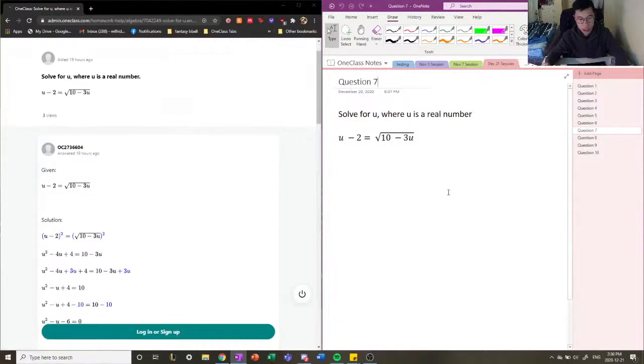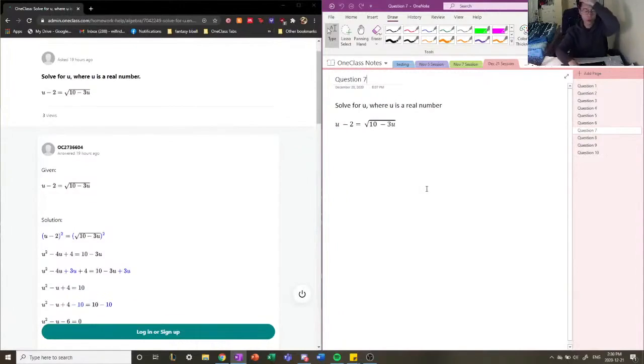Question number seven reads: solve for u where u is a real number. So we need to find the values of u which will satisfy this equation. It's kind of difficult here; you could try using guesswork and say, what if u was like one or four, would they equal the same thing? But we're going to try to do this more systematically.